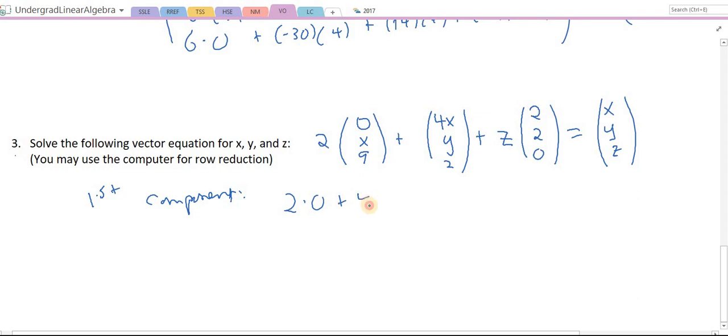The first component gives me 2 times 0 plus 4x plus 2z equals x. Now I want to reorganize it so I have something times x plus something times y plus something times z equals a constant. If I bring the x to the other side, that gives me 3x. There's no y, so I'll just say 0y plus 2z, and this equals 0.